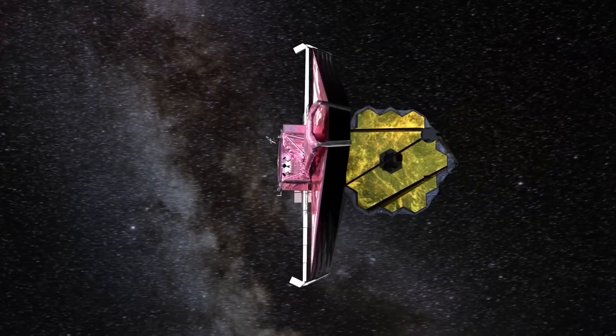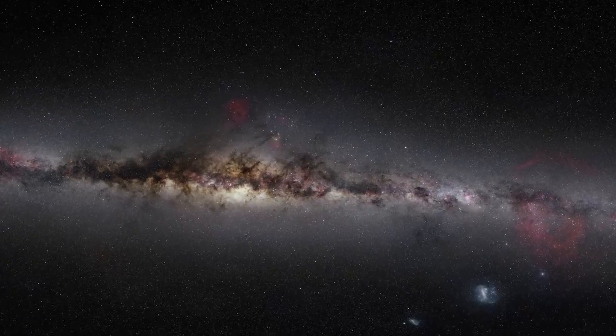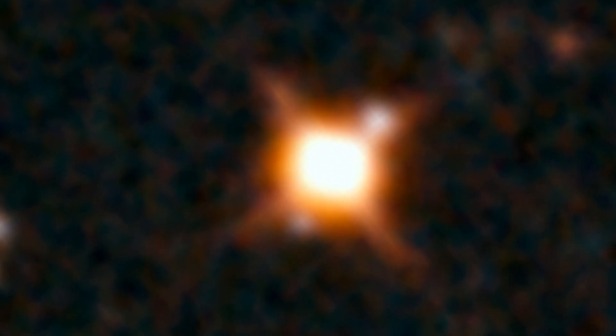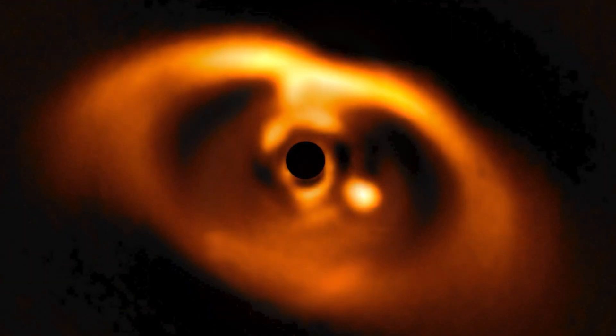Researchers have recently focused on a young star, PDS-70, which lies nearly 370 light-years from Earth and is about 5.4 million years old, compared to about 4.6 billion years for our own star, the Sun.